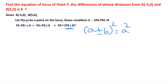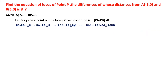So PA² = PB² + 64 ± 16·PB, since 8² = 64 and 2×8 = 16. Transposing PB² and 64 to the left-hand side gives PA² - PB² - 64 = ±16·PB. Now we need to find PA² and PB² using the distance formula.